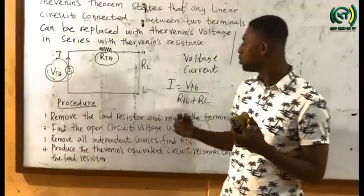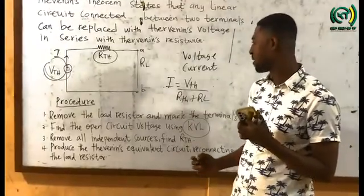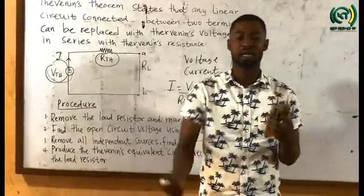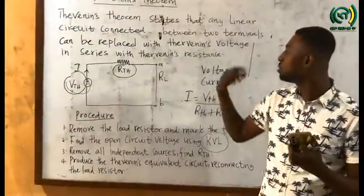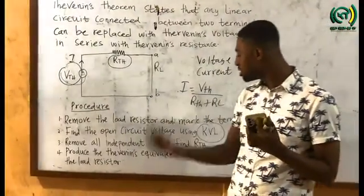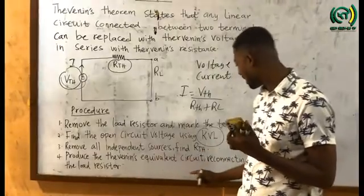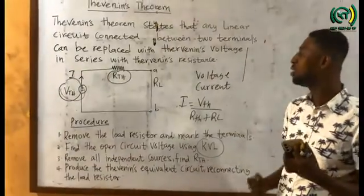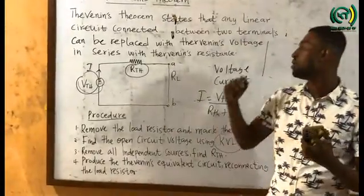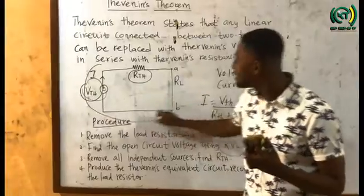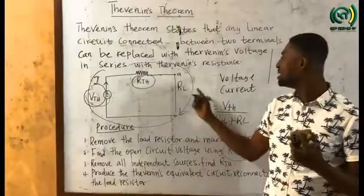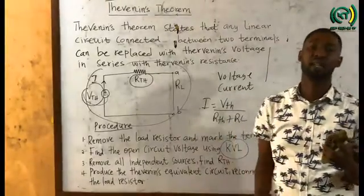Thirdly, remove all independent sources and find RTH. In the circuit diagram, we remove all current sources and voltage sources so that we can calculate RTH. Lastly, produce the Thevenin's equivalent circuit by reconnecting the load resistor. Once we are done with all the procedures, we arrive at the Thevenin's equivalent circuit, whereby the load resistor is connected in series with the Thevenin's equivalent resistance.